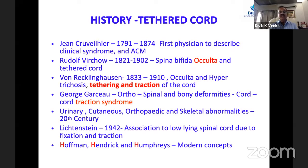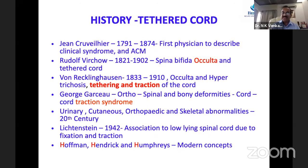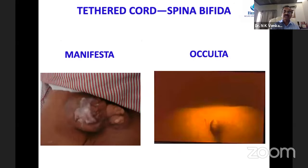Garcia, an orthopedic surgeon, described spinal and bony deformities and spinal cord tightness, calling it cord traction syndrome. Urinary, cutaneous, and skeletal abnormalities became prominent in the 20th century. Lichtenstein in 1942 first described the association of a low-lying spinal cord with the possibility of traction due to fixation. The three Hs — Hoffman, Hendrick, and Humphreys — began the modern era of tethered cord syndrome.